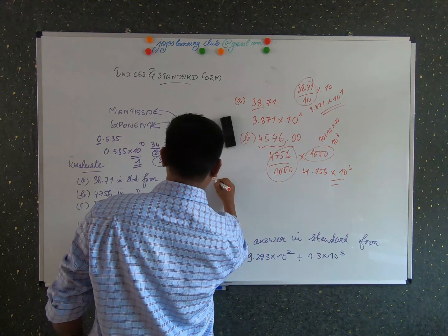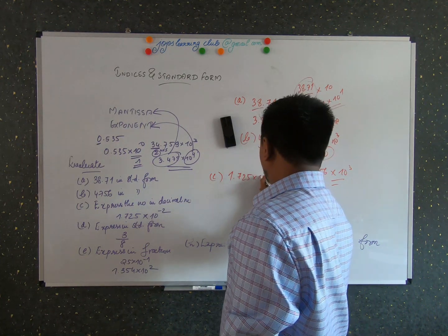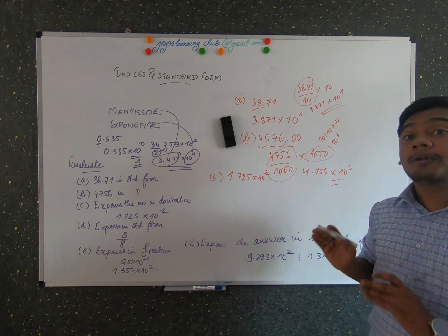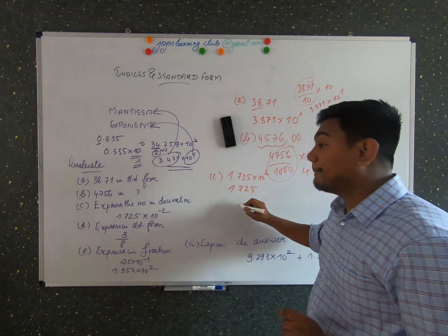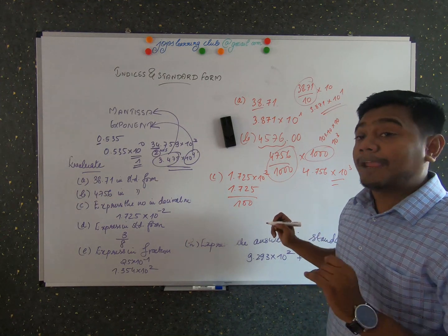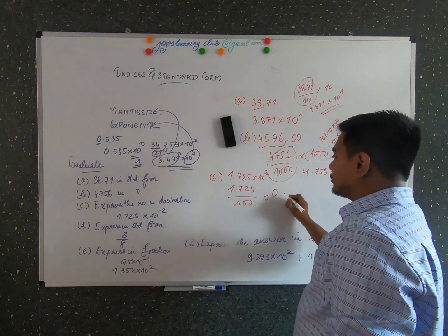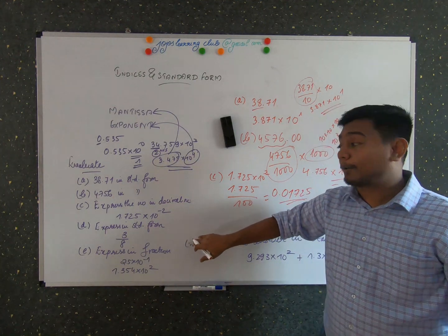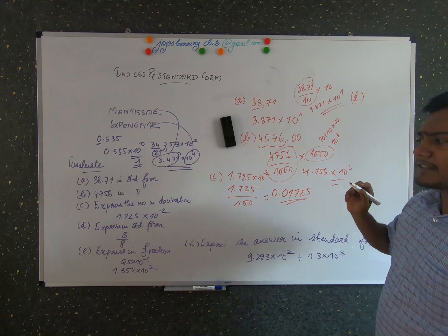Problem 8c: express 1.725 × 10⁻² as a decimal number. This is already in standard form and we need to convert it back. 10⁻² means 1/10², which is 1/100. So we divide 1.725 by 100. Moving the decimal point two places left gives 0.01725. That is the final answer for problem 8c.